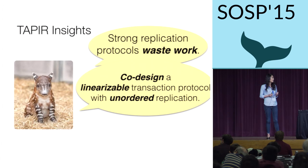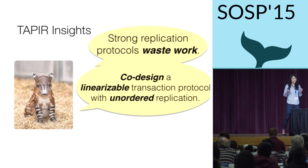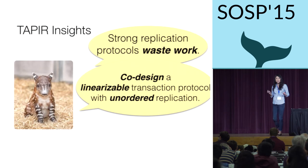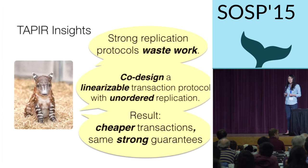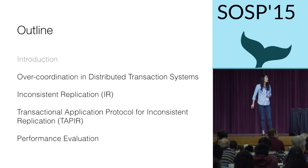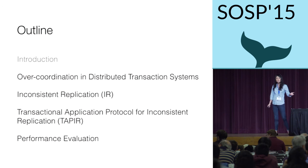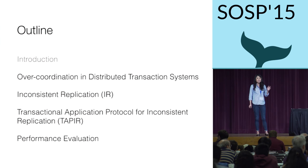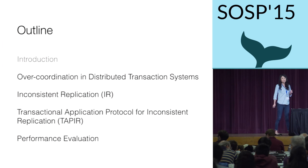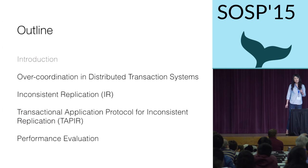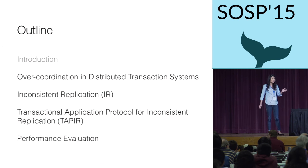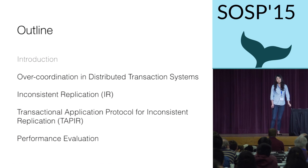Instead, we're going to co-design a new transaction protocol that enforces a linearizable transaction ordering, but on top of a replication layer that's completely unordered. This will allow us to reduce the cost of distributed transactions. In the rest of the talk, I'll explain why existing systems use strong consistency at both layers and what this costs in performance. Then I'll introduce Inconsistent Replication, or IR, our new unordered replication protocol. Then I'll talk about TAPIR, the Transactional Application Protocol for Inconsistent Replication, a new linearizable transaction protocol designed to work with IR. Finally, I'll show the performance benefits of our co-design.